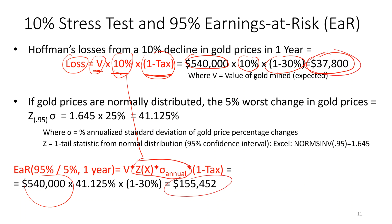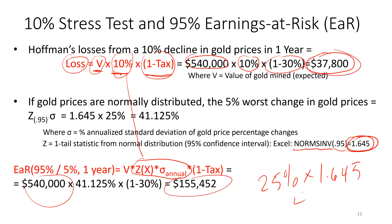Z(X) is a one-tail statistic from the normal distribution table, consistent with a 95% confidence interval. Typing in Excel: =NORM.S.INV(0.95) gives 1.645. This means if a variable is normally distributed with a standard deviation of 25%, there is a 5% chance of being 1.645 standard deviations away from the mean or more. There's a 5% chance of 1.645 standard deviations above the mean, and a 5% chance of 1.645 standard deviations below the mean. Multiplying 25% by 1.645 gives 41.125%.